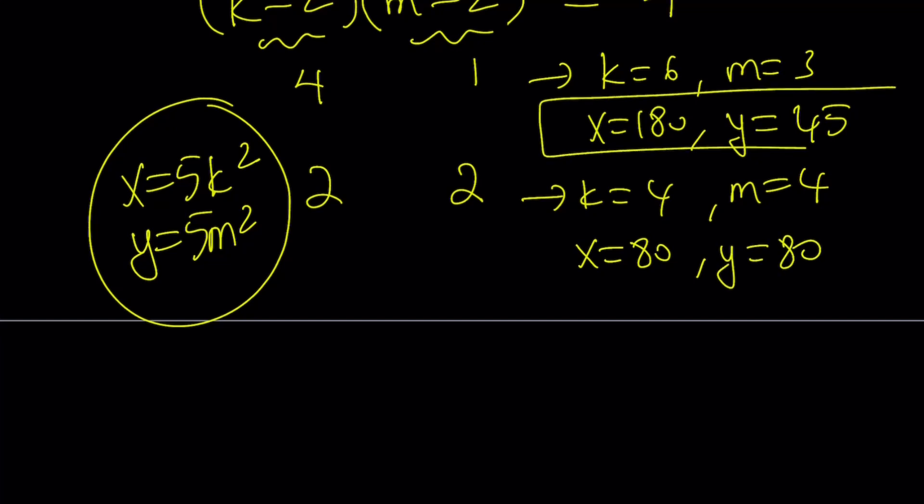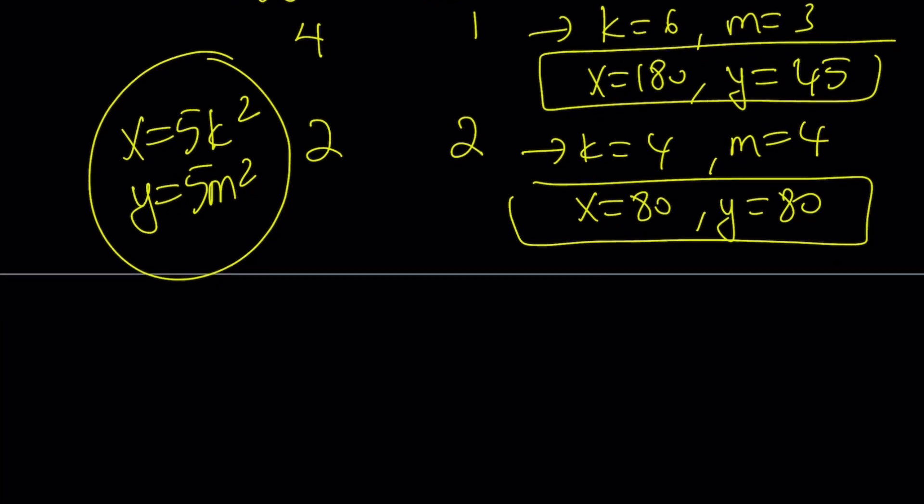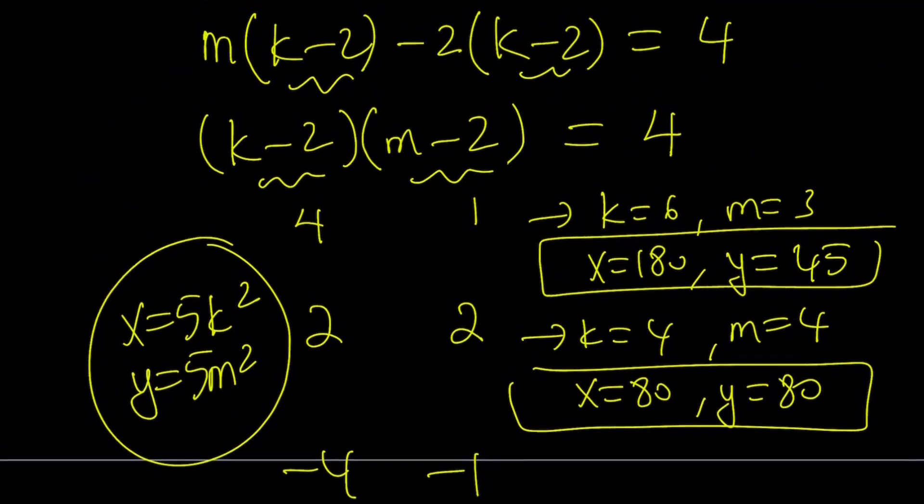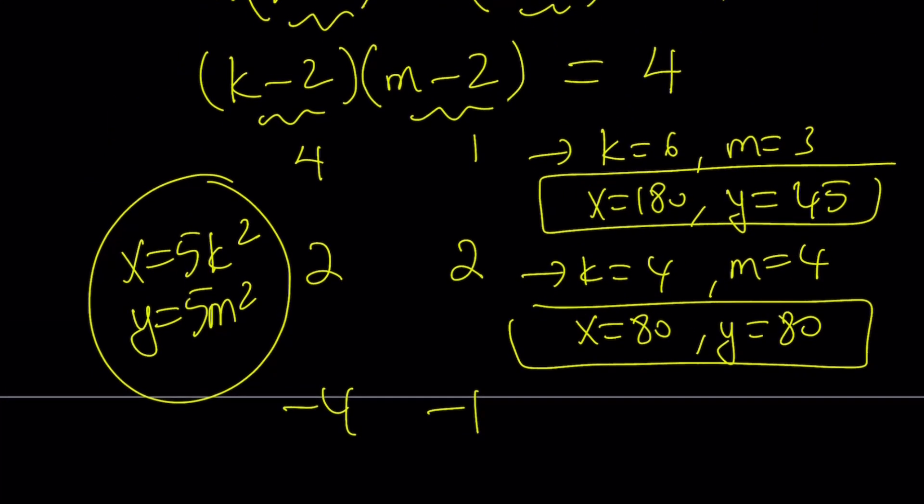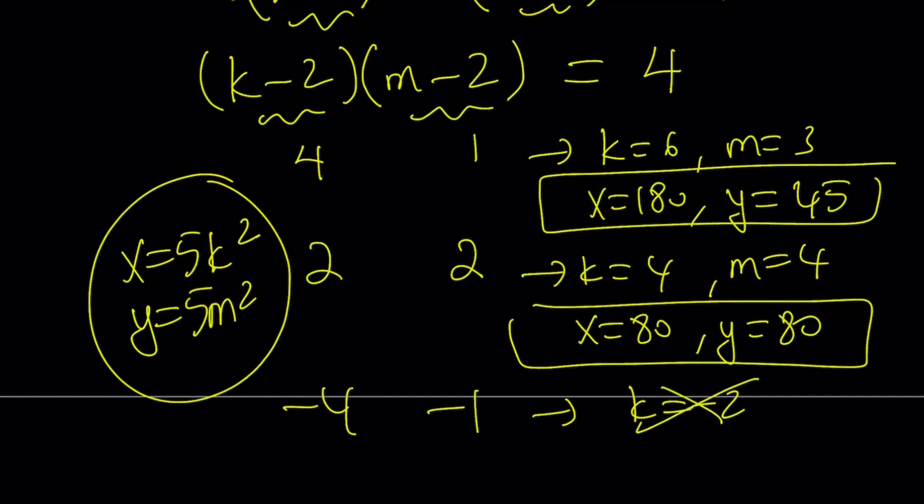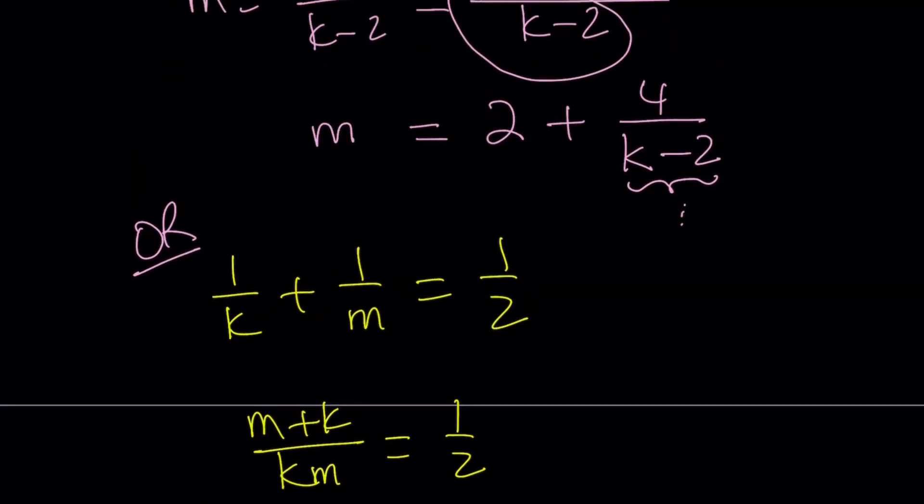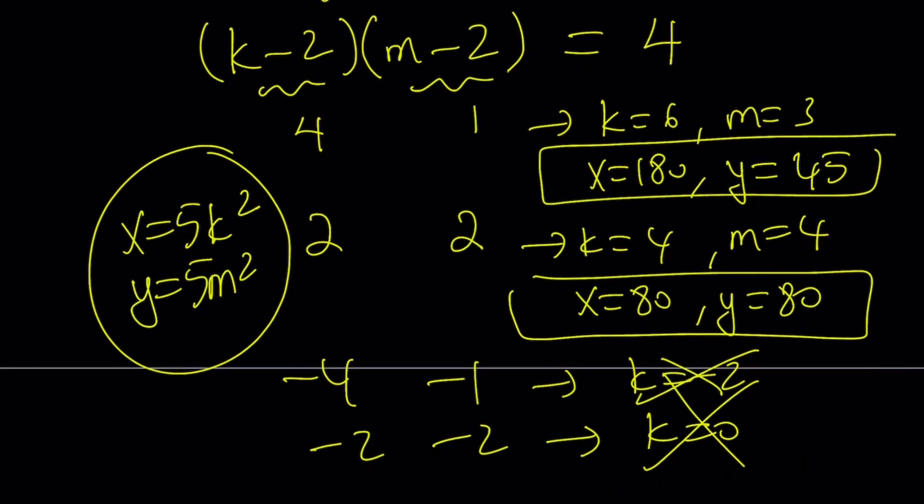So we're kind of getting these and they're not the only solutions because we're going to look at other cases as well. How about negative 4 and negative 1? If k minus 2 is negative 4, that just indicates k is negative 2. But you know that's not going to work. If we have negative 2 and negative 2, that means k is 0. That's not going to work either. Because if k is 0, x is 0, uh-oh, that's a no-no. You can't do it.